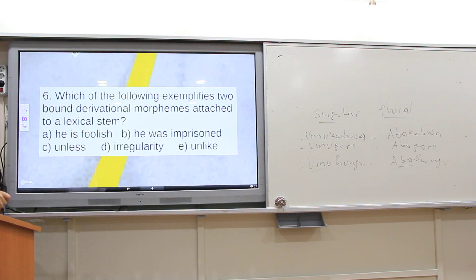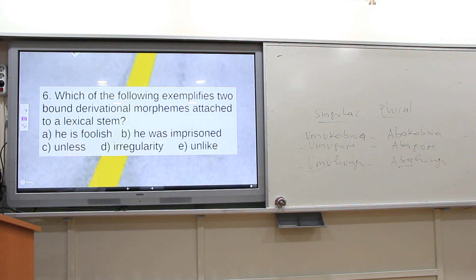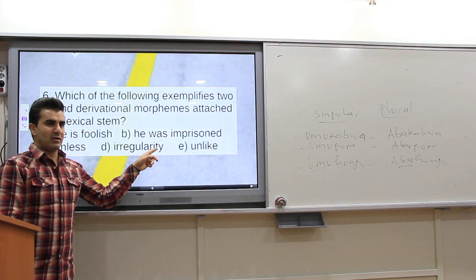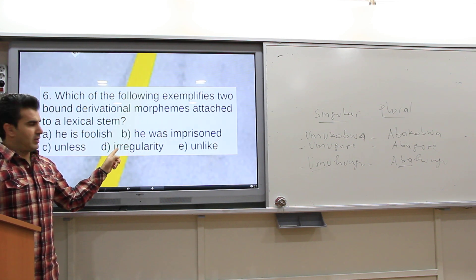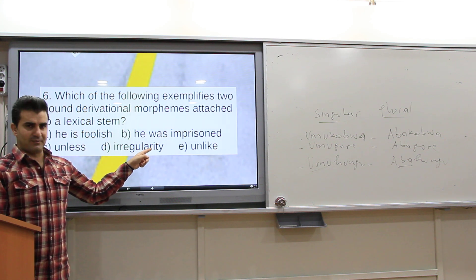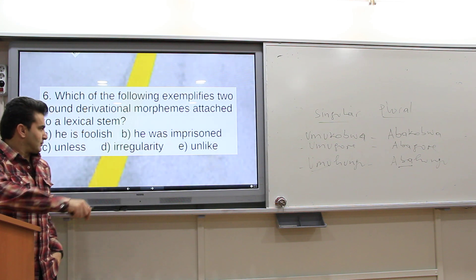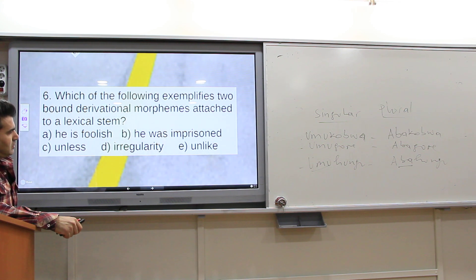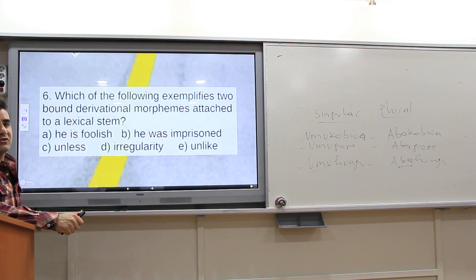Which of the following examples applies two bound or derivational morphemes attached to a lexical stem? Two bound morphemes. The answer is 'irregularity.'